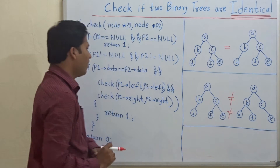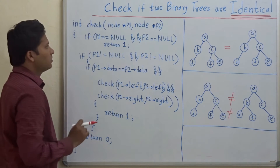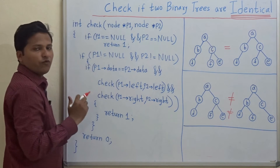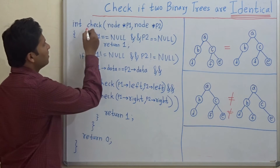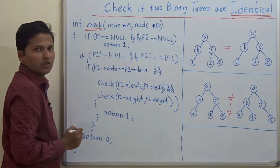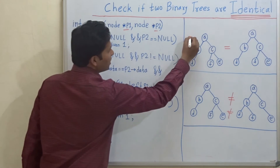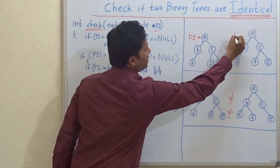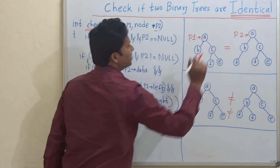Let's see how to write a program for this. Here is a recursive function which we are going to use for checking if two binary trees are identical or not. The name of the function is 'check' and the parameters are p1 and p2. p1 points to the root of the first tree and p2 points to the root of the second tree.